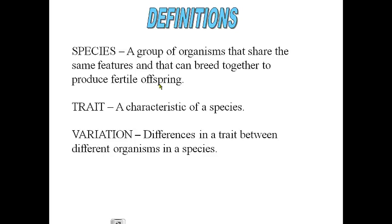In humans we have traits as well — things like eye color, hair color, blood type, skin color, height, and gender. All of those things are traits in human beings. A trait is basically a characteristic of a species.